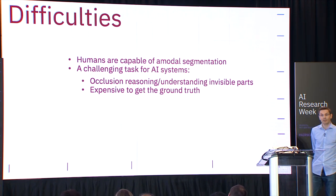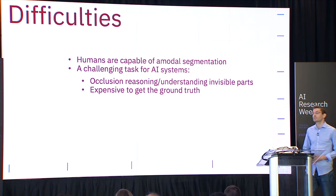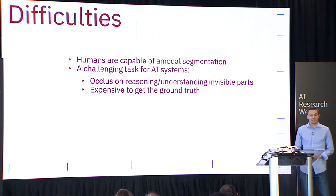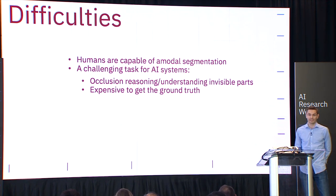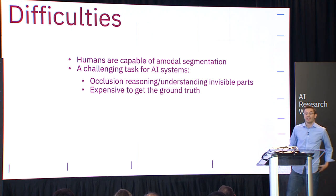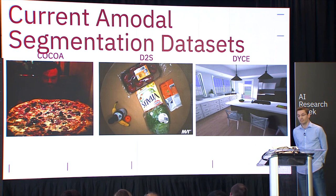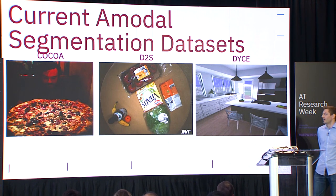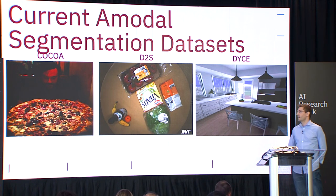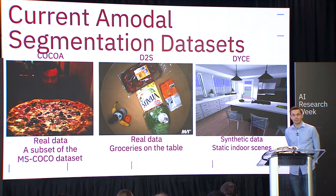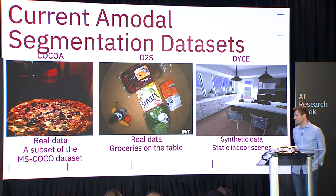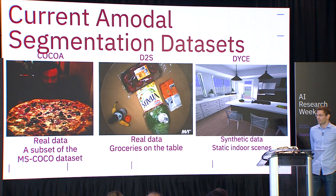While humans can perform this task to reasonable accuracy, it is quite challenging for AI systems. Part of the reason is that occlusion reasoning is tough — ground truth data is very expensive to obtain, and we have very little of it. Existing datasets in this area — Cocoa, D2S, and DICE — have limitations. Cocoa is a subset of MS COCO with barely 5,000 images, not exactly large scale. There's a groceries-on-a-table dataset which is not a common day-to-day environment, and a synthetic dataset of static indoor scenes.